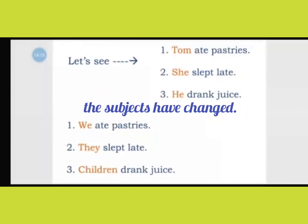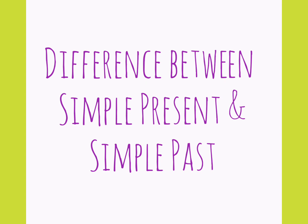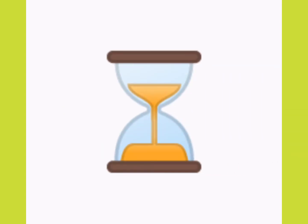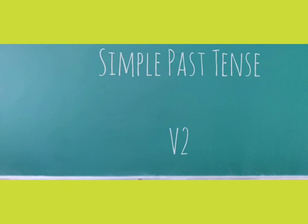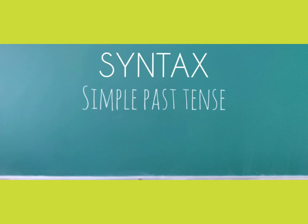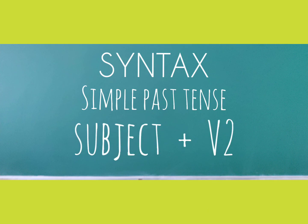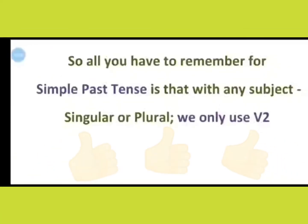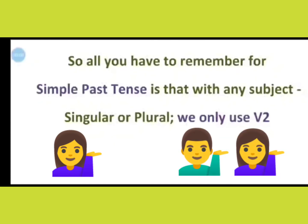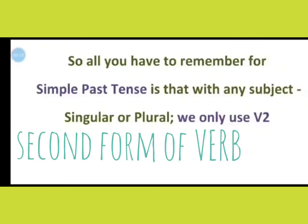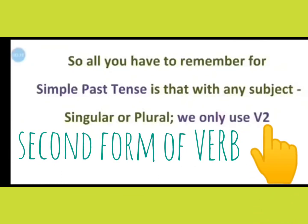Let's also see the difference between simple present and simple past tense. In simple present tense we use V1, whereas in simple past we use V2. So the rule or syntax or formula for simple past tense is: subject plus V2. All you have to remember is that with any subject, be it singular or plural, we only use verb form 2 in simple past tense.